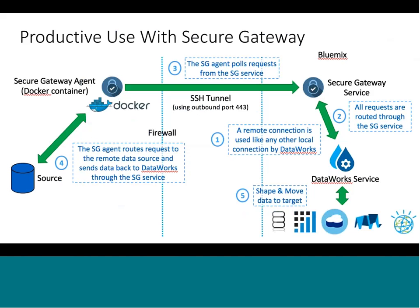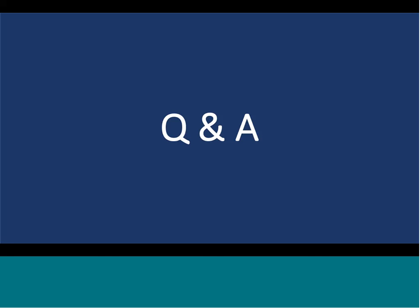One of the crucial things to having successful data preparation is the ability to reach data behind a firewall. One of the key things is security. Especially when you're talking about data on the cloud, you need to have the ability to reach behind a firewall, tunnel through firewalls and get that data wherever it is — whether it's on the cloud or data that is on-premise systems.